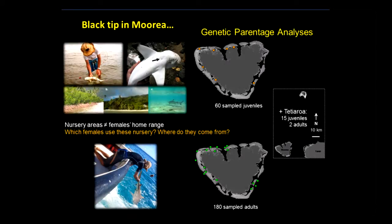We started with genetic parentage analysis. We collected pups — because sharks are a little different from recruits — pups that occur on the fringing reef in very shallow water. The main reason they occur in shallow water is because adults try to eat them. So they go in very shallow water, sometimes just 20 centimeters. We collected about 200 adults and about 60 pups in one year. We also collected some juveniles from a small island about 50 kilometers from Moorea, called Tiahura, where we saw some genetic difference.